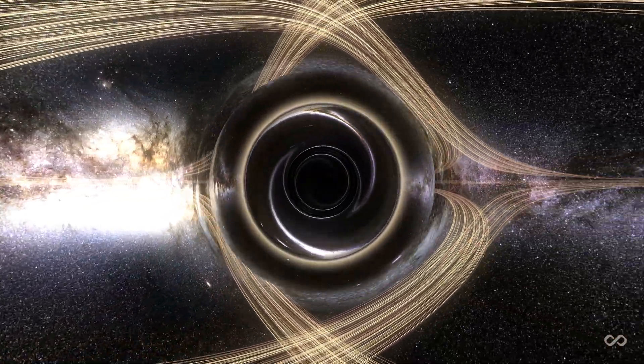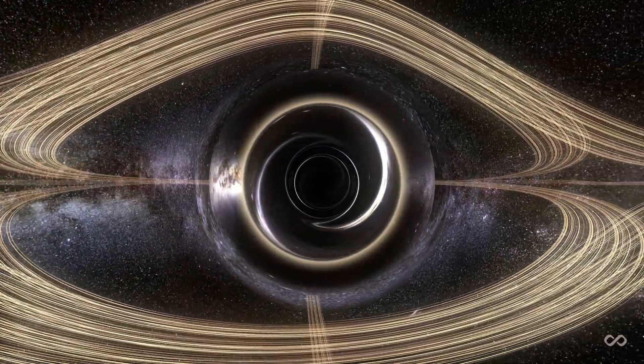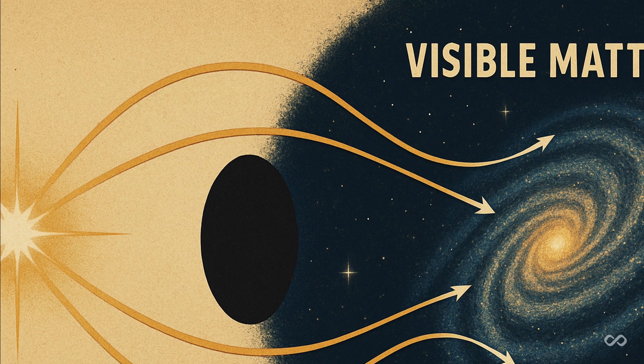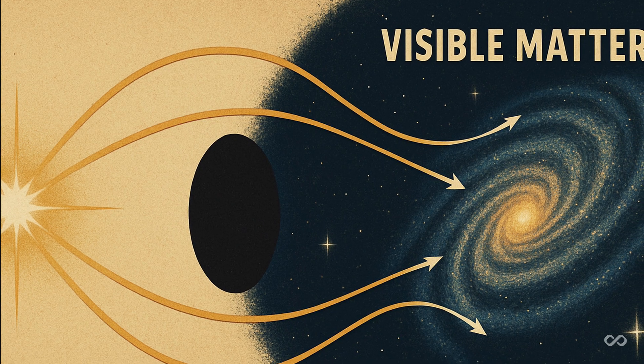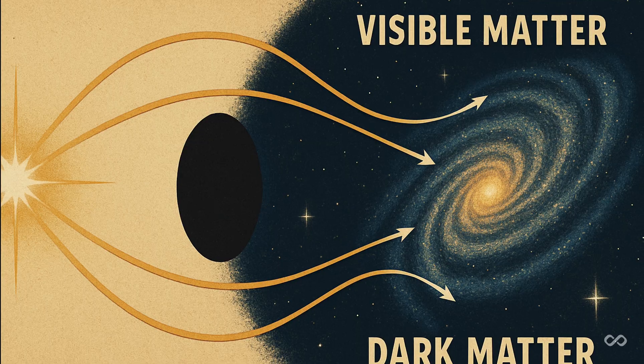When light from a distant galaxy travels past another galaxy on its way to Earth, it gets bent, distorted by gravity. But sometimes the light bends more than the visible matter alone can explain. Something invisible is pulling on it. That something? You guessed it. Dark matter.